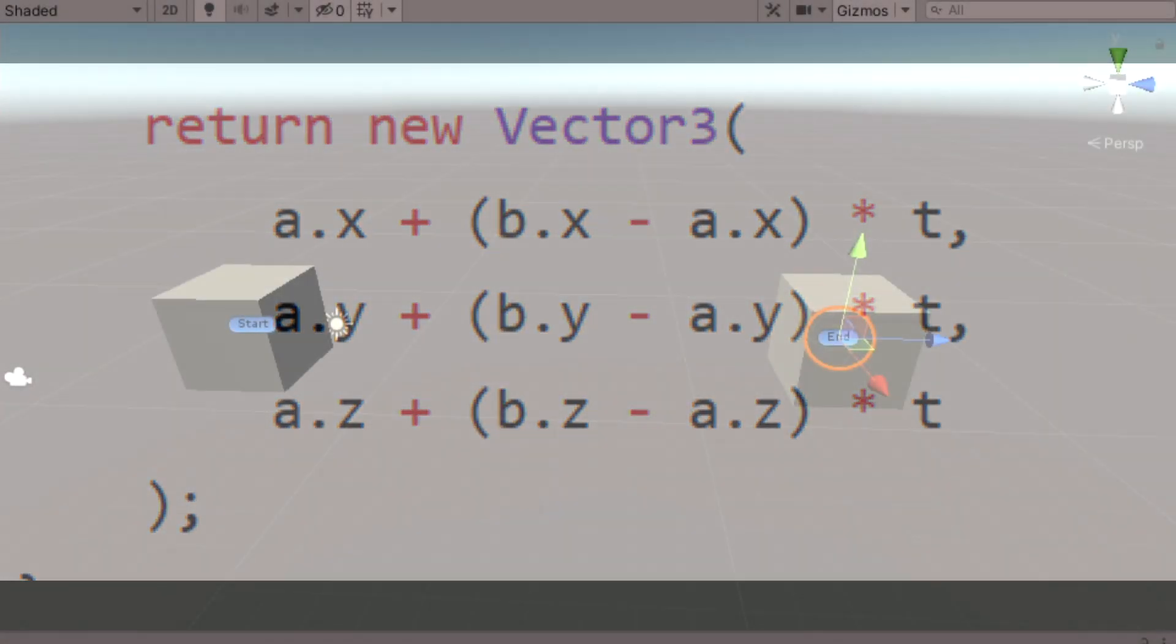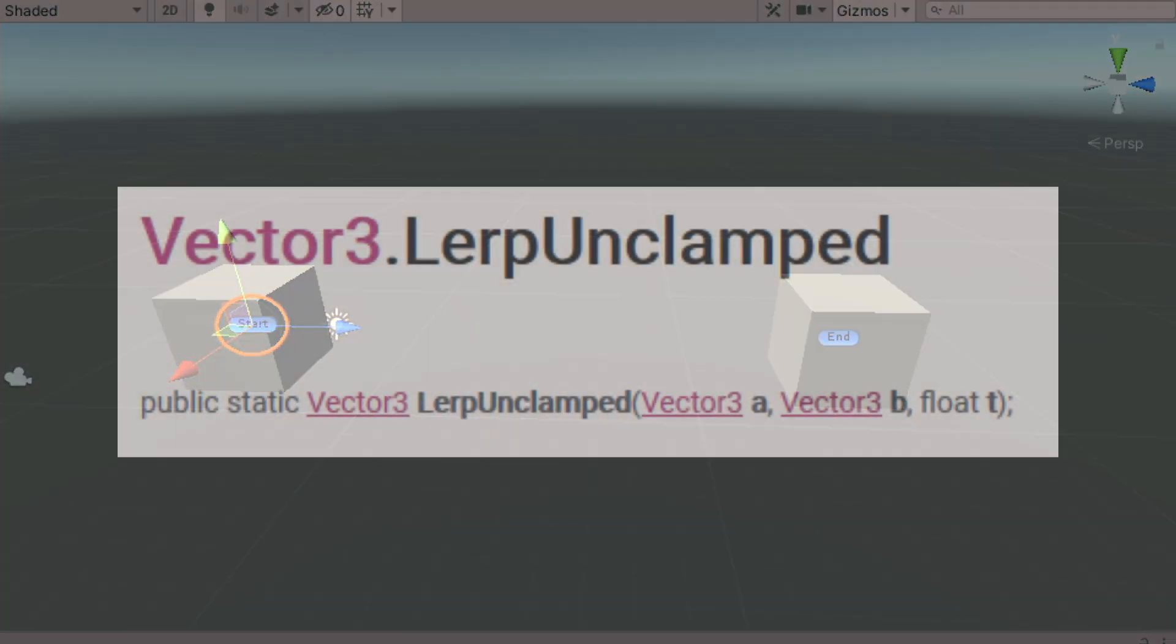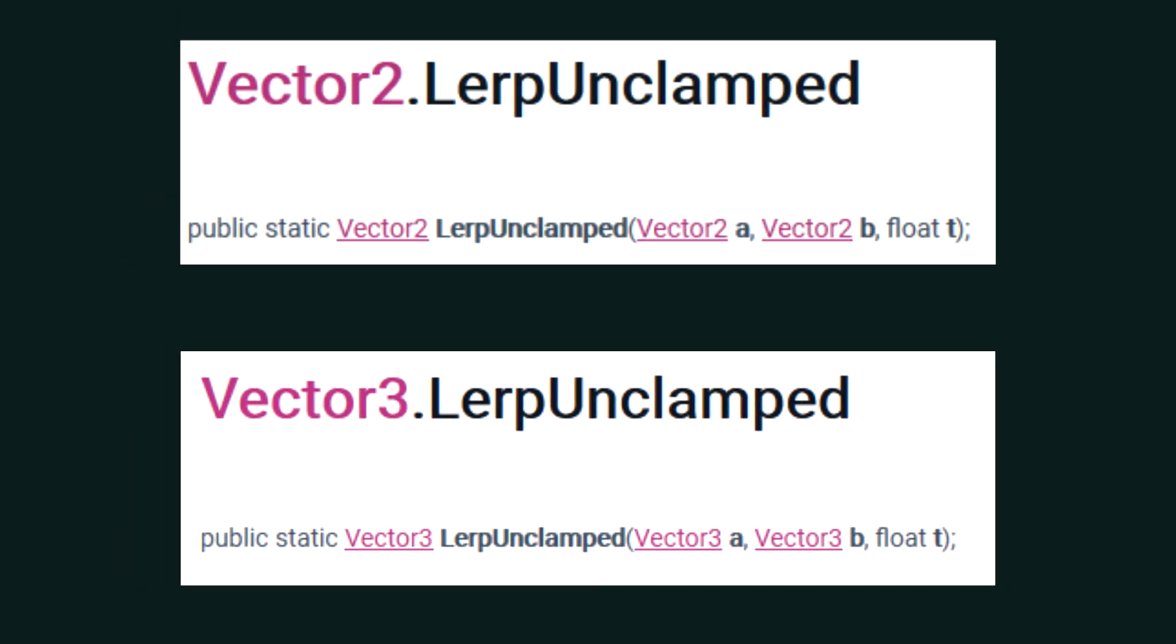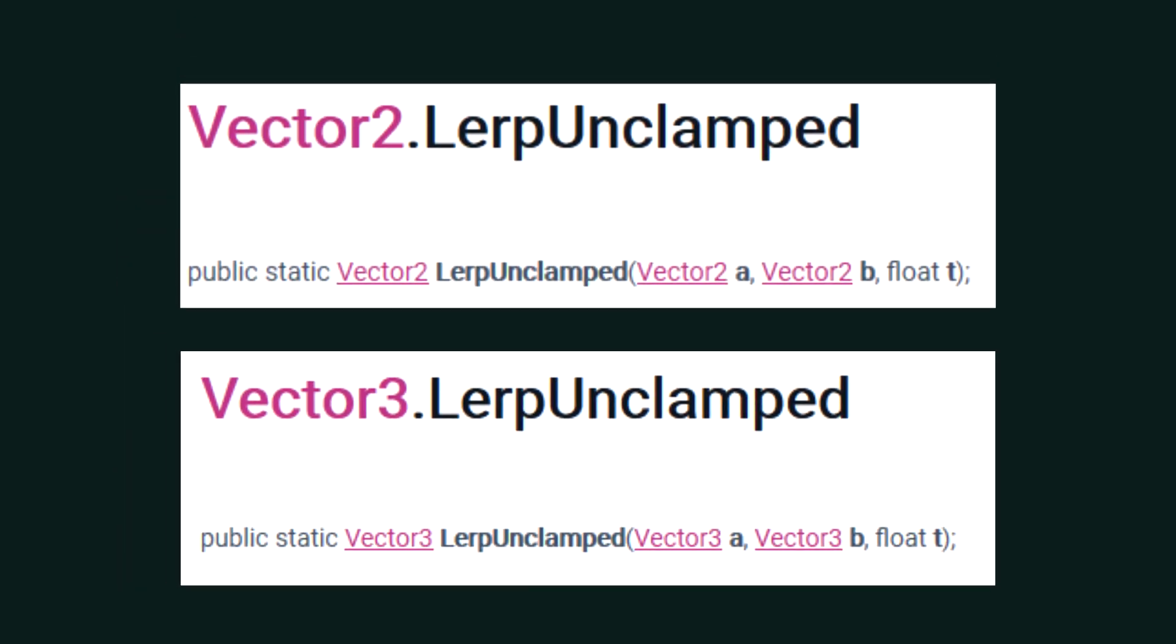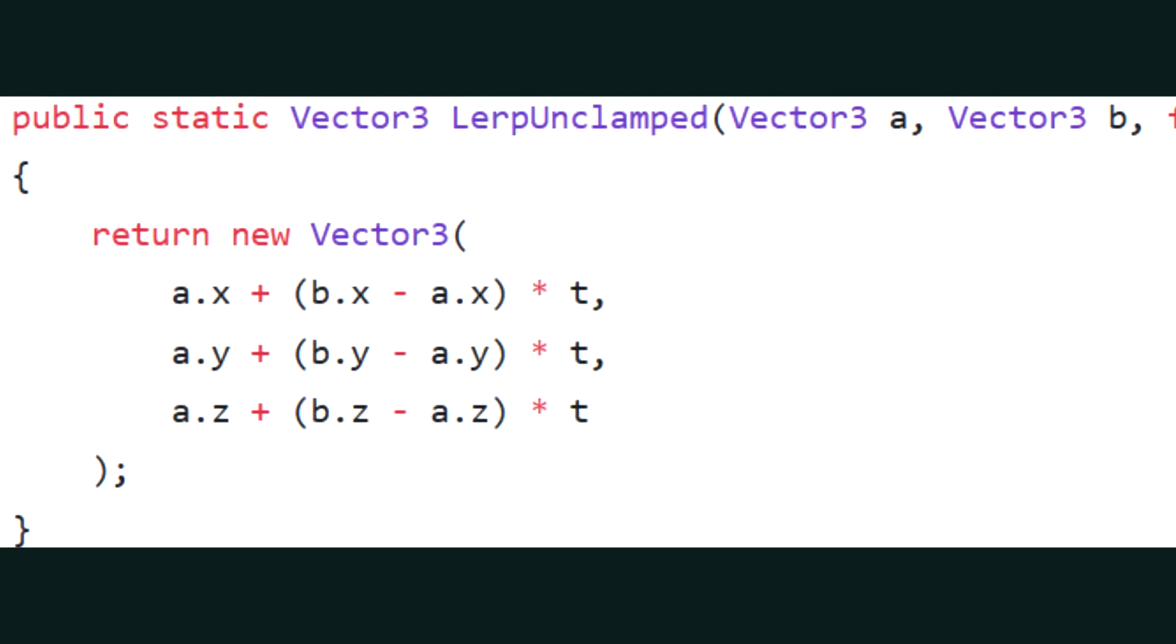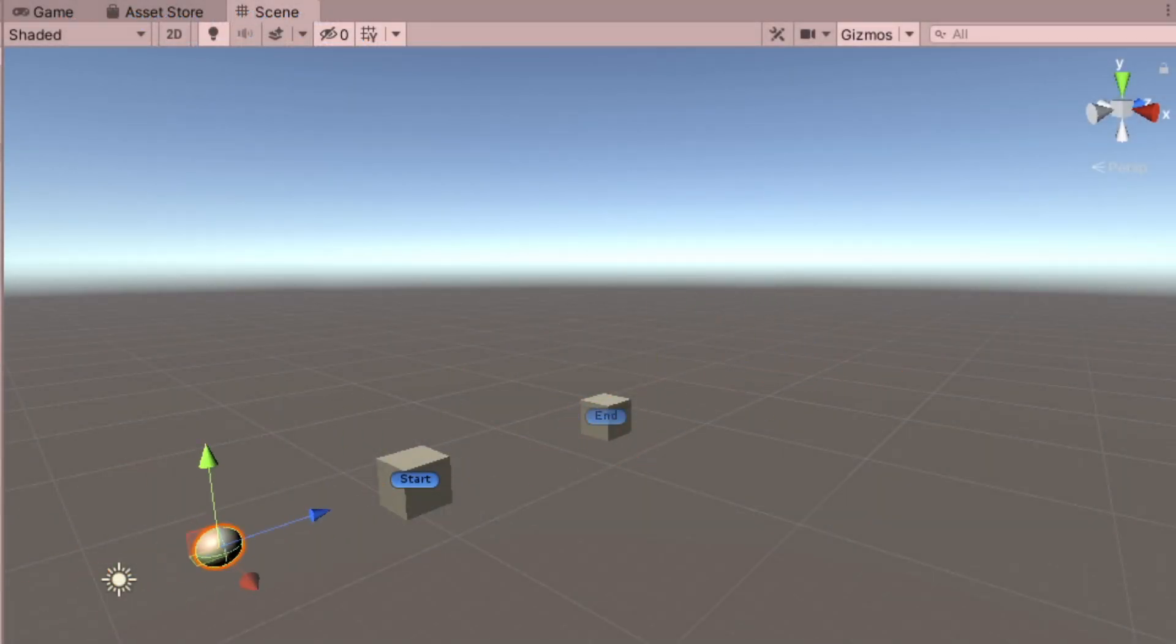If this isn't what you wanted, and you'd like to be able to address the area beyond the start and end points, Unity offers a variation of the LERP function called LERP-UNCLAMPED, which is available for both 2D and 3D vectors. This takes identical arguments, but in this case T isn't clamped inside the function before it's used. To achieve this in our 3D demo, we can simply call LERP-UNCLAMPED instead of LERP, and the sphere is now free to move beyond its start and end points in either direction.